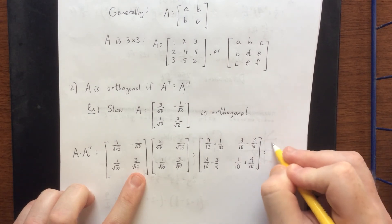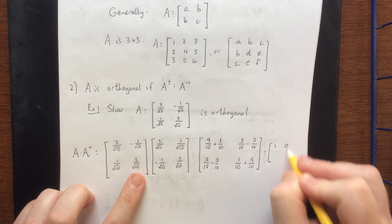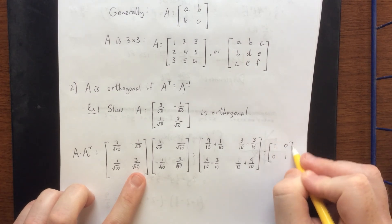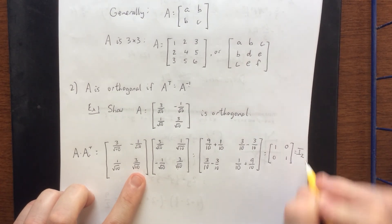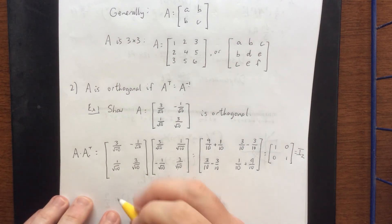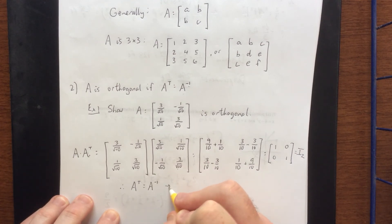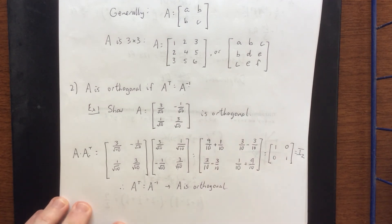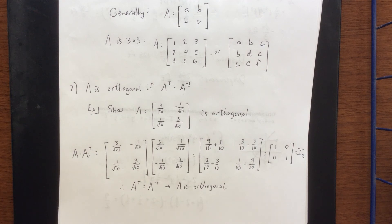You can verify that each of these entries will become 1, 0, 0, and 1, which is in fact the 2 by 2 identity matrix. Therefore, A transpose is equal to A inverse, meaning that A is orthogonal. I mentioned that there are some very specific situations that make A orthogonal. We're going to investigate some of those in our upcoming videos. How do we create an orthogonal matrix?